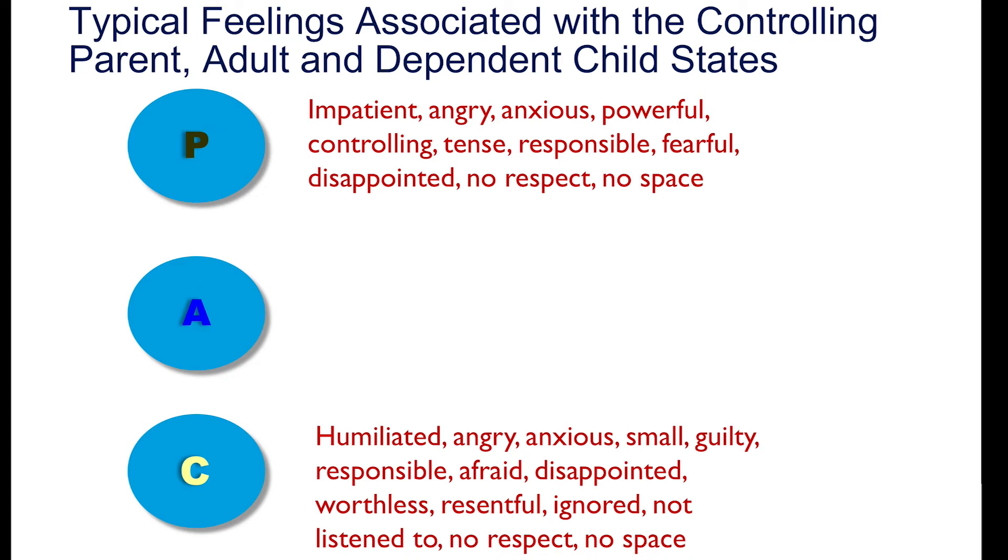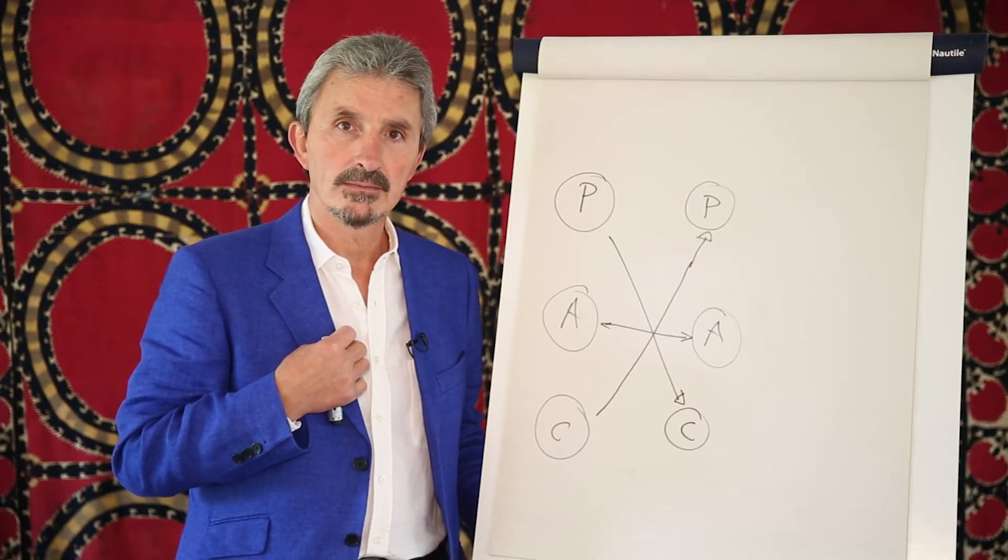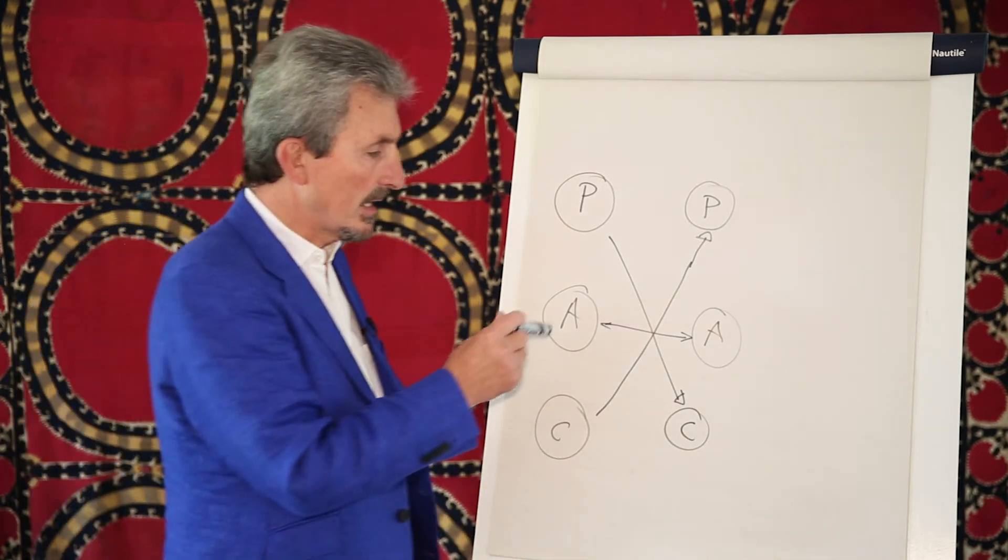Again, not a very pleasant place to be. And also, if you look at this, you'll see although externally these two states of dependent child and controlling parent seem very different, actually when you look at the internal experience, they are amazingly similar. The same words of fearful, anxiety, impatience, anger, lack of respect, that sense of having no space or space for movement or development. Nobody would choose to be here, and both states are based upon our old friend fear. They are fearful states.